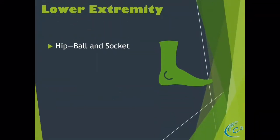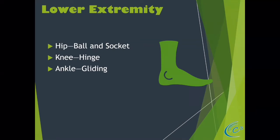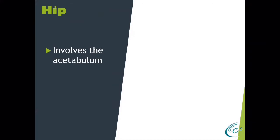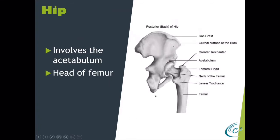That was the upper extremity. Let's go to the lower extremity. We start with the hip, also known as a ball and socket joint. Then we have the knee, a hinge joint just like the elbow, and the ankle, which is a gliding joint. The hip involves the acetabulum, which is part of the pelvis, and the head of the femur. Look how this head of the femur sits way into this socket — this is a very stable joint. That's what a ball and socket joint looks like; if you remember going back to the shoulder, the socket is a fraction of this particular socket, which is why it's a particularly unstable joint.